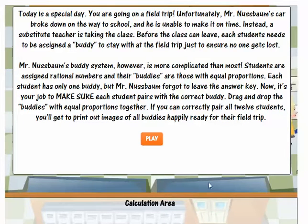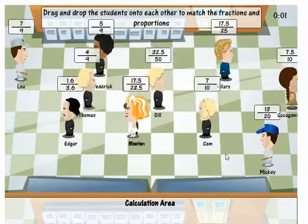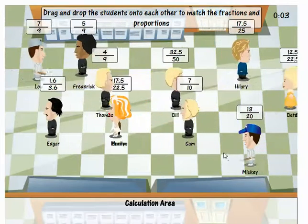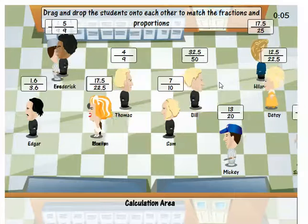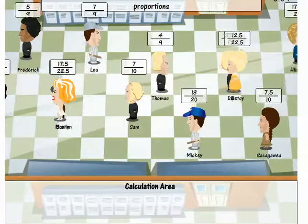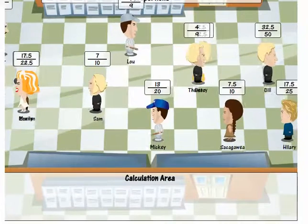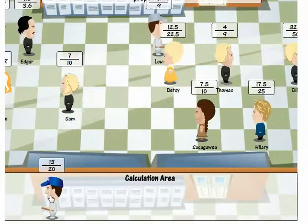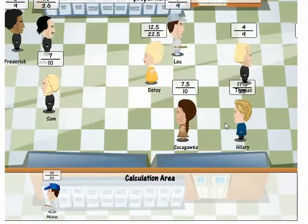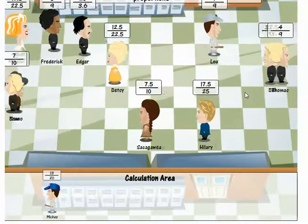So then I click play and you see there's all sorts of these students walking around, each has a proportion. Now it can be difficult, it's a challenging game, but what you can do is you can drag them down to this calculation area.